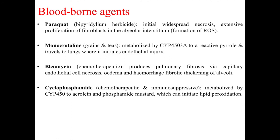Monocrotaline, found in some grains and teas, is metabolized by cytochrome P450 3A enzymes to a reactive pyrrole version of the molecule. This travels to the lungs where it initiates endothelial injury of the capillaries. Bleomycin, a chemotherapeutic agent, produces pulmonary fibrosis via capillary endothelial cell necrosis, edema, hemorrhage, and fibrotic thickening of the alveoli. Cyclophosphamide, also a chemotherapeutic and immunosuppressant drug, is metabolized by cytochrome P450 to acrolein and phosphamide mustard, which can initiate lipid peroxidation of the alveolar epithelial cells.